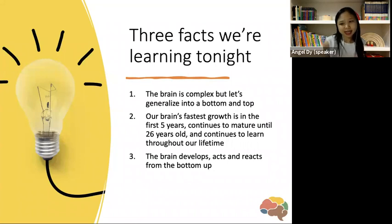So there are three main facts that I want you to learn tonight. One is that the brain is very complex, but I'm going to try to simplify it and generalize it to bottom and the top parts of our brain. The second fact is that our brain's fastest growth is in the first five years of life. Fastest growth, but it continues to mature until 26 years old. And we can continue to learn throughout our entire lifetime. And then the third one is that the brain develops, acts, and reacts from bottom up.